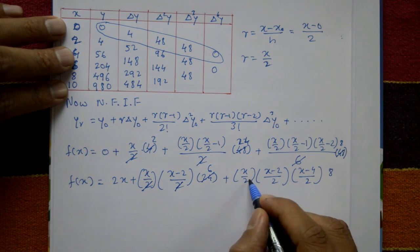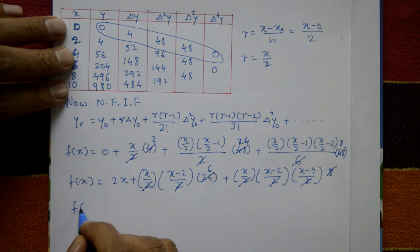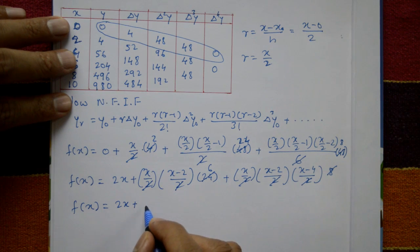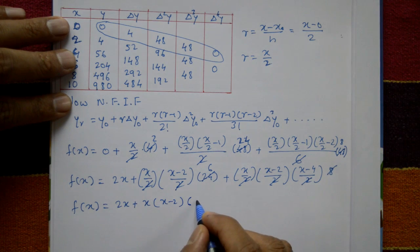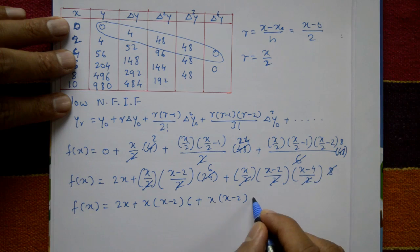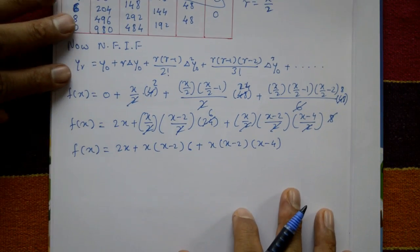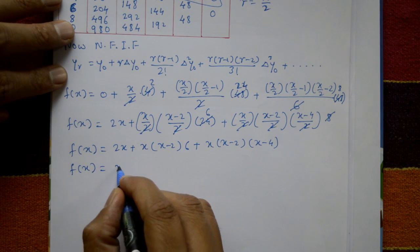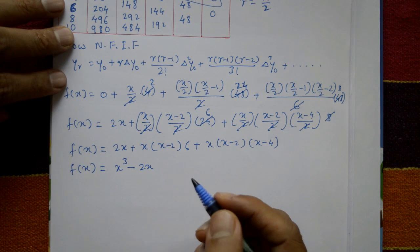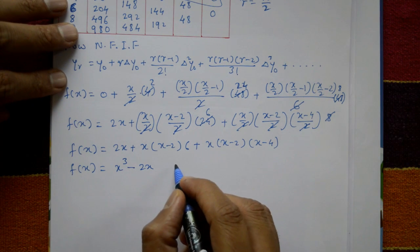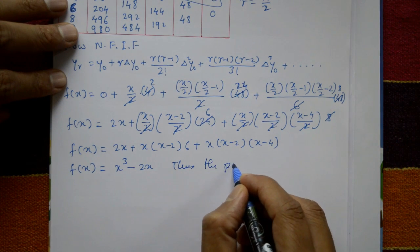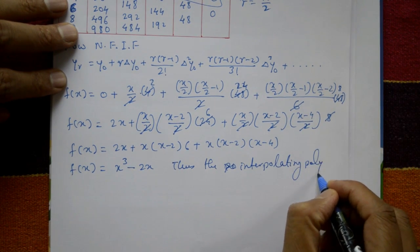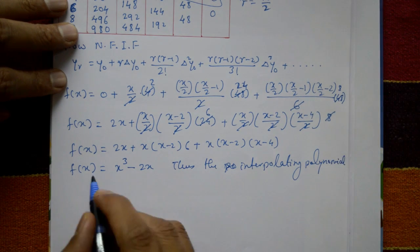After cancellation and opening all brackets, f(x) = 2x + x(x−2)·6 + x(x−2)(x−4). Expanding fully, the interpolating polynomial is f(x) = x³ − 2x.